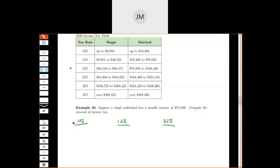So what we do is we pour our money into this 10% bucket until it's full. This bucket holds up to $9,950. So $9,950 of our income goes into this 10% bucket. Now it's full, so we start dumping into the 12% bucket.